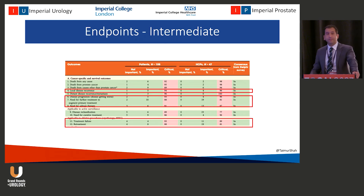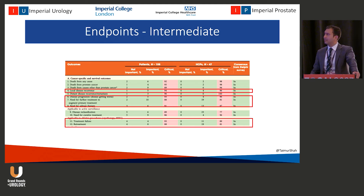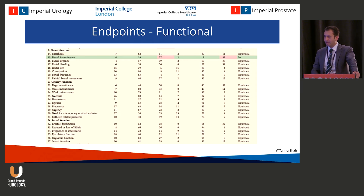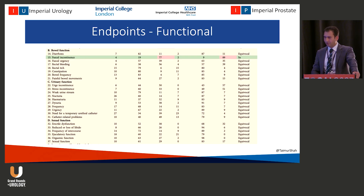They also identified various intermediate outcome measures: local disease recurrence, transitioning to salvage treatments, retreatments. There is a group of other outcome measures we could potentially use to power a study. What I found quite surprising was that although everyone agreed functional outcomes were important — and this is often the reason patients come to see us, wanting to preserve function — there was no consensus that these are appropriate outcome measures for a comparative trial in localized disease.